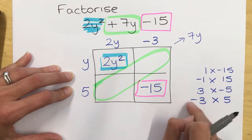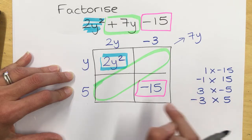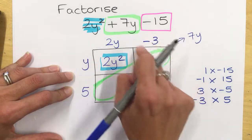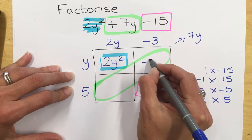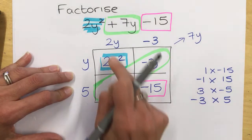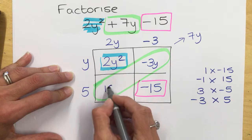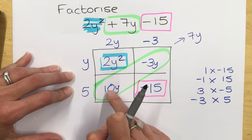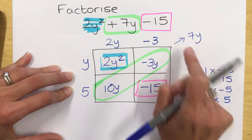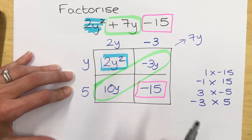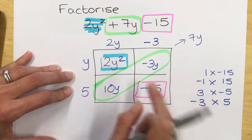Which comes from this last combination here. Because if I do y multiplied by minus 3, I get minus 3y, and if I multiply 2y by 5, my answer in here is 10y, and then 10y add minus 3y is 7y. So that combination works.